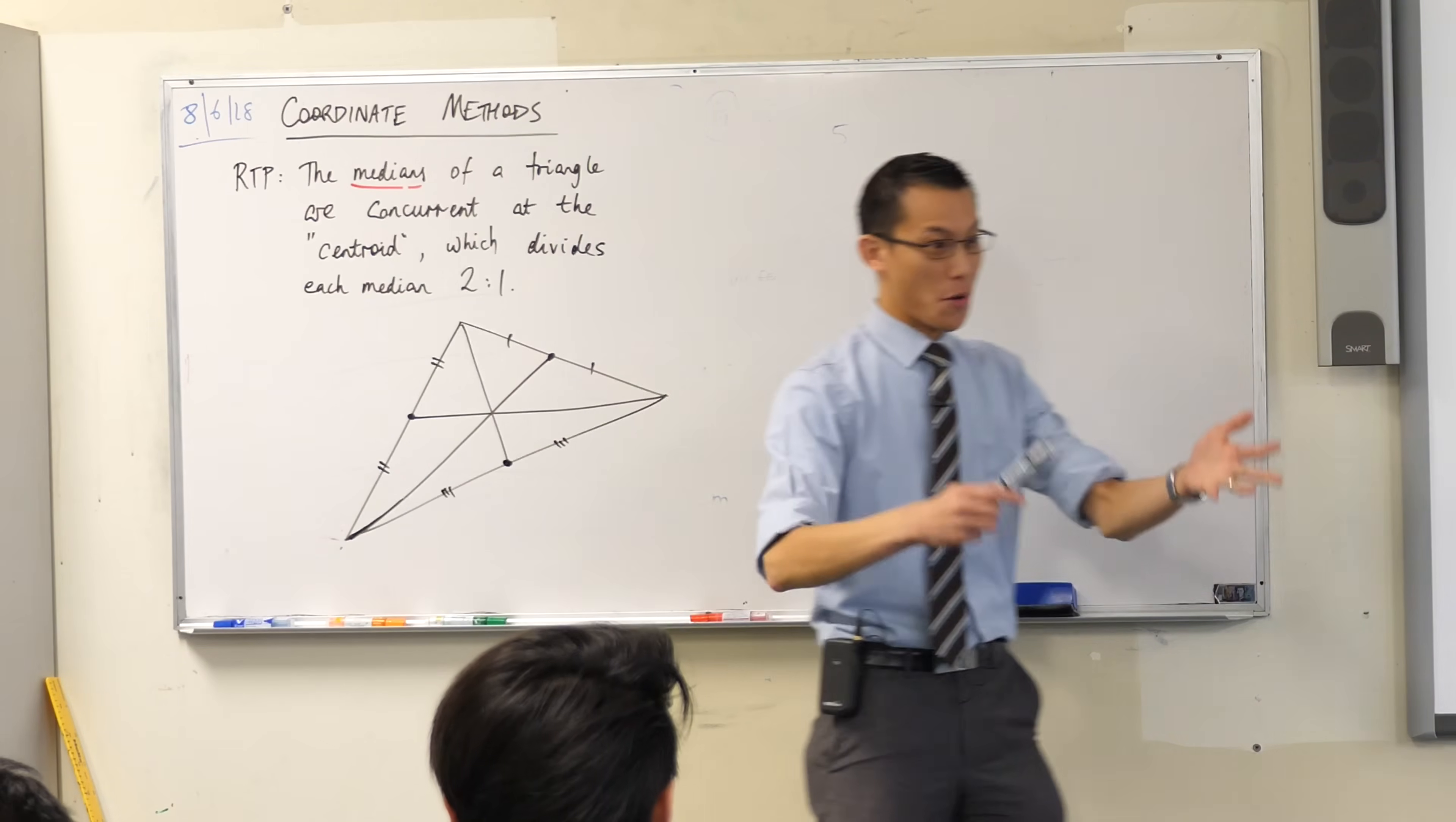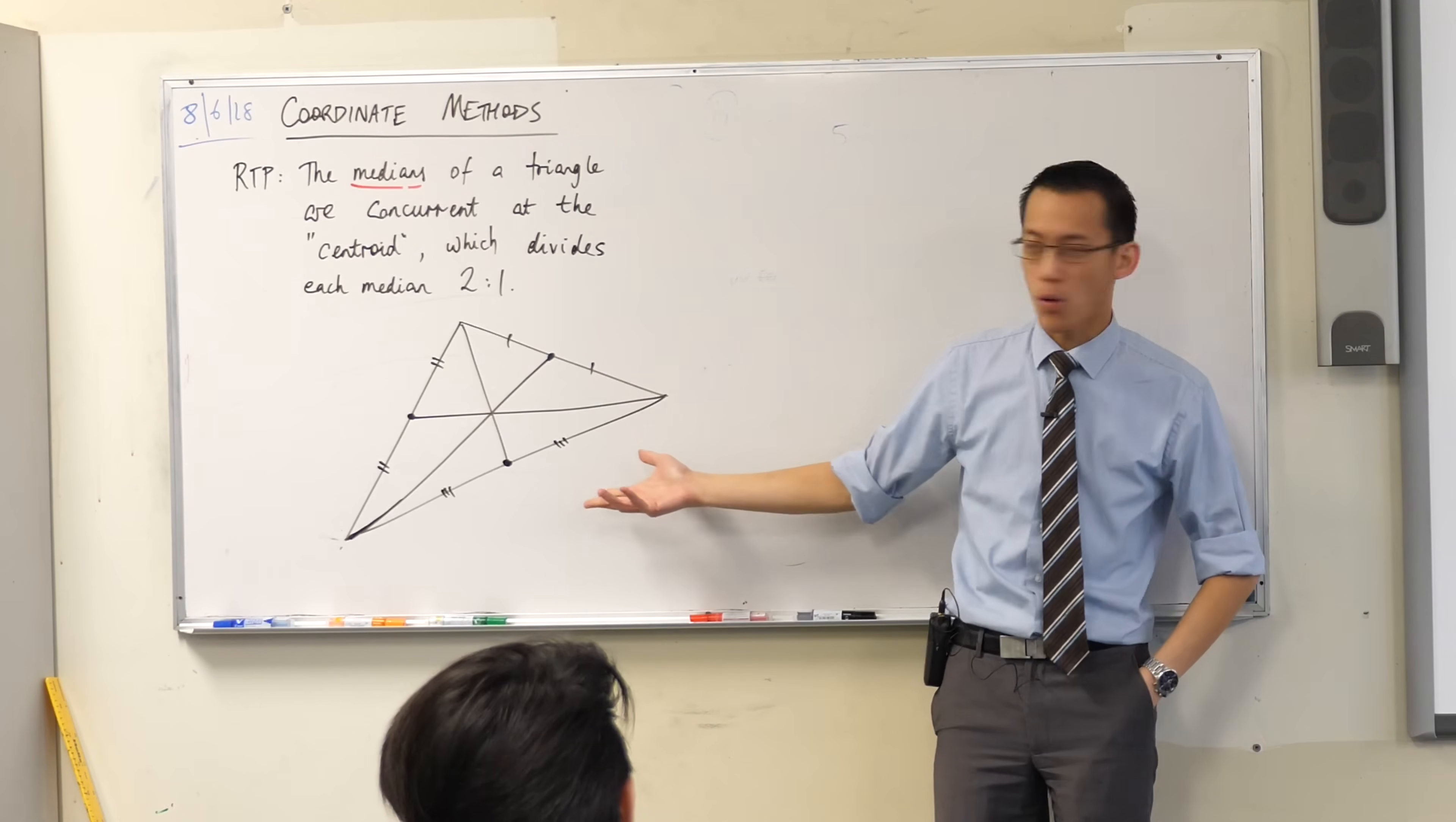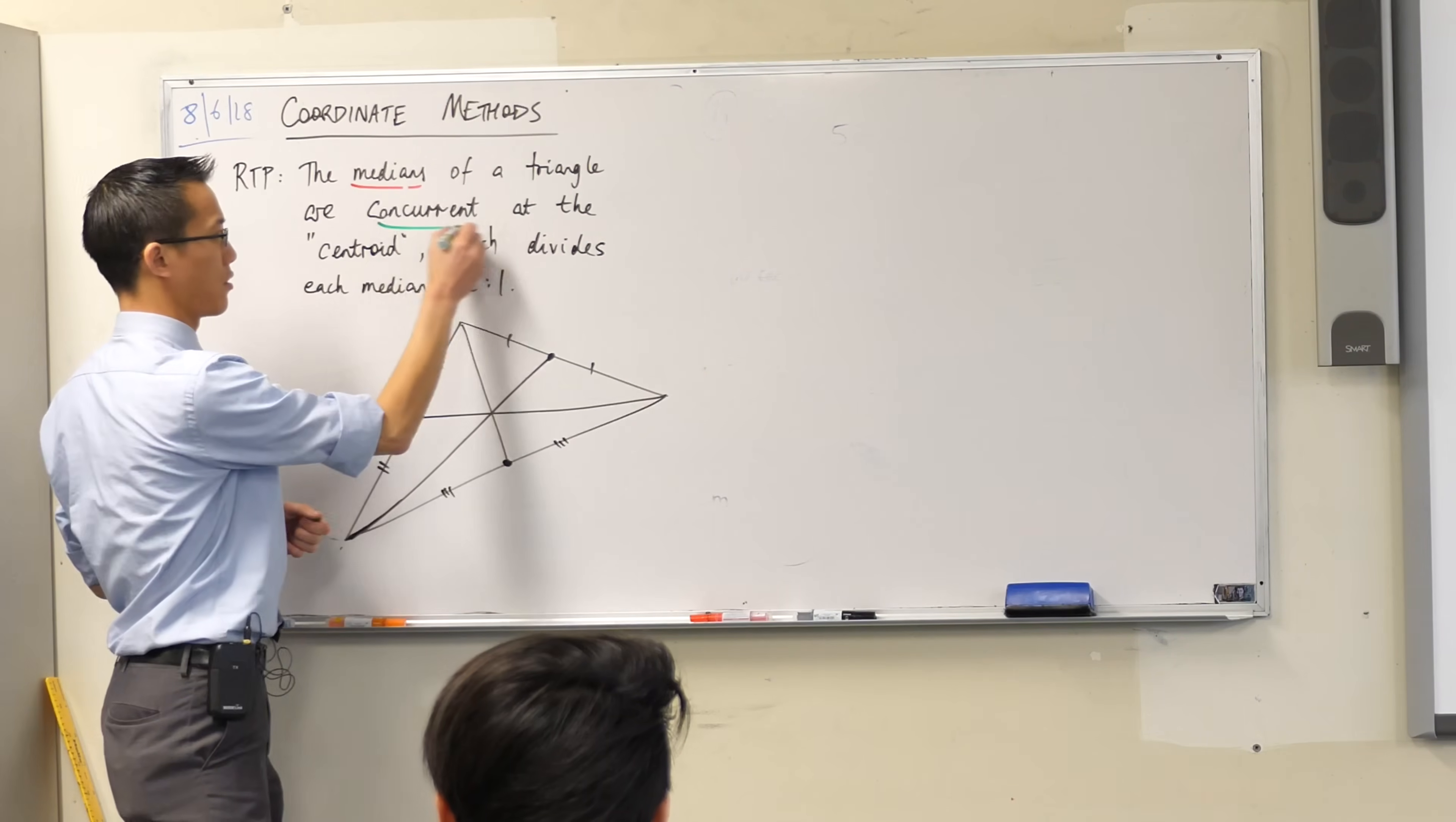Now, we know what medians are now. They divide up each of the sides into half. So, what this property is suggesting is, well, it's sort of what I've drawn here, right? That the medians of a triangle are concurrent. What does that mean? Concurrent. That's what the diagram tells you, right? Concurrent.